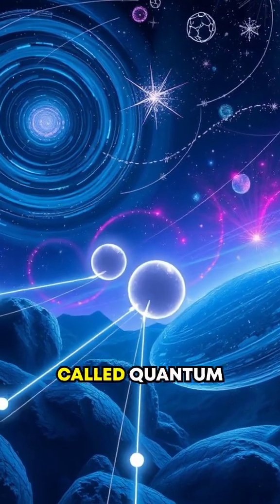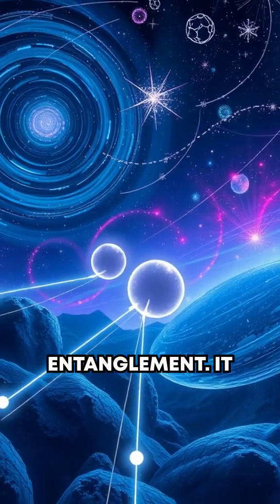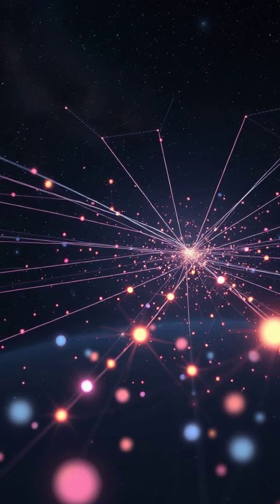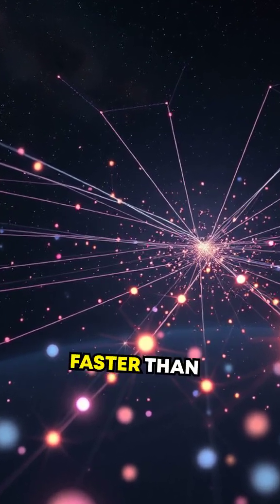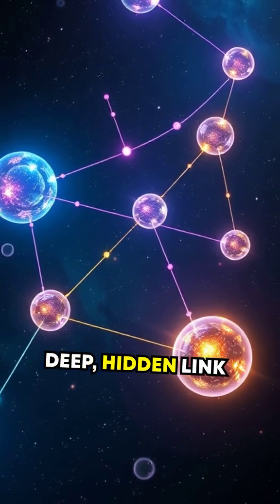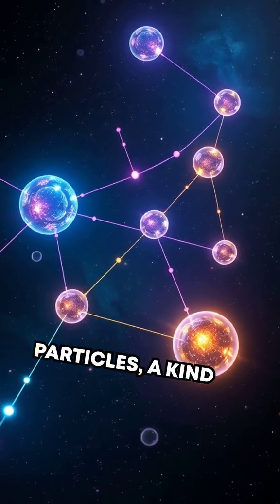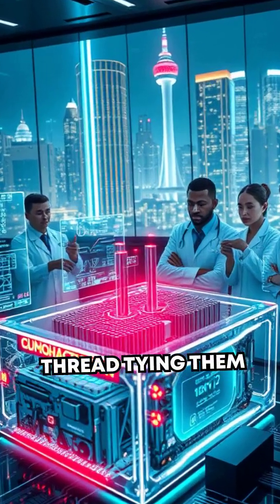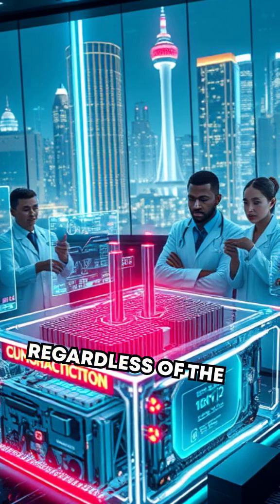This bizarre behavior is called quantum entanglement. It defies our usual understanding that information can't travel faster than light. Instead, it suggests a deep, hidden link between these particles, a kind of invisible thread tying them together, regardless of the distance.